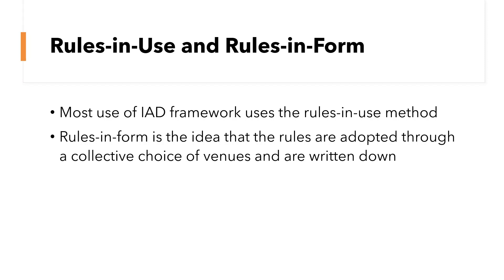So it's those embedded rules — the rules that we have in society where we think, okay, I can't say this, it's not appropriate in the public domain. Then moving on to rules in form: this is the idea that the rules are adopted through a collective choice of venues and are written down. This is the study of policy, for example.